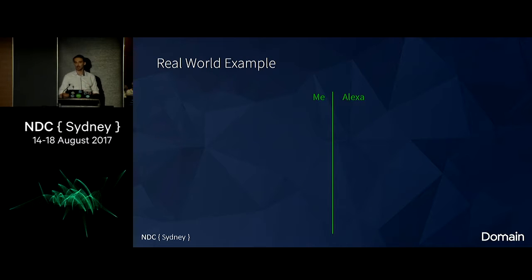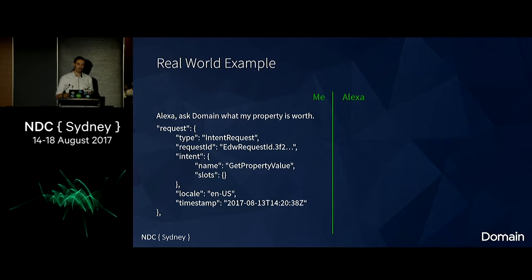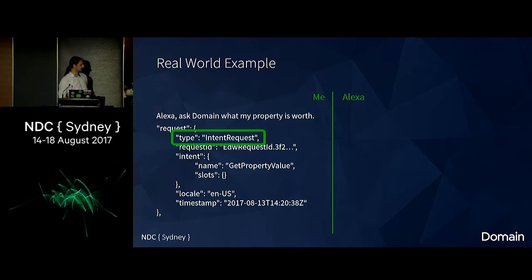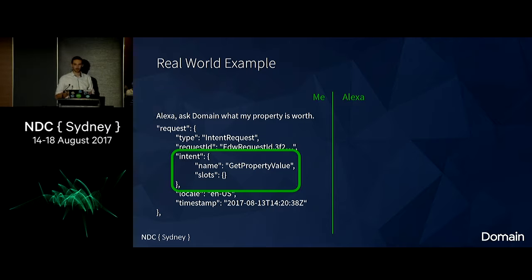I thought we might as well go through a real-world example and show you what we've done at Domain. So I could say 'Alexa, ask Domain what my property is worth.' What happens is before it reaches my APIs, Amazon is going to parse all this, and I'm going to get a few things in the request as JSON. You don't have to worry about parsing the text — the voice processing is done for you. It picked up the intent 'get property value' with no parameters.